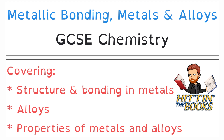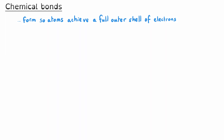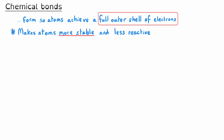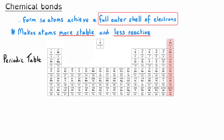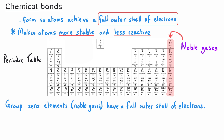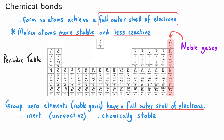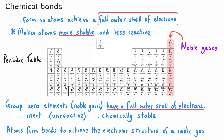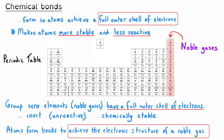We'll finish by taking a look at the properties of metals and of metal alloys. Chemical bonds are formed so atoms can achieve a full outer shell of electrons. This makes atoms more stable and therefore less reactive. In the periodic table, the elements of group zero are called the noble gases. These elements have a full outer shell of electrons which makes them chemically inert — in other words, they are unreactive and chemically stable. The other atoms in the periodic table react and form chemical bonds until they have the same electronic structure as one of the noble gas elements.